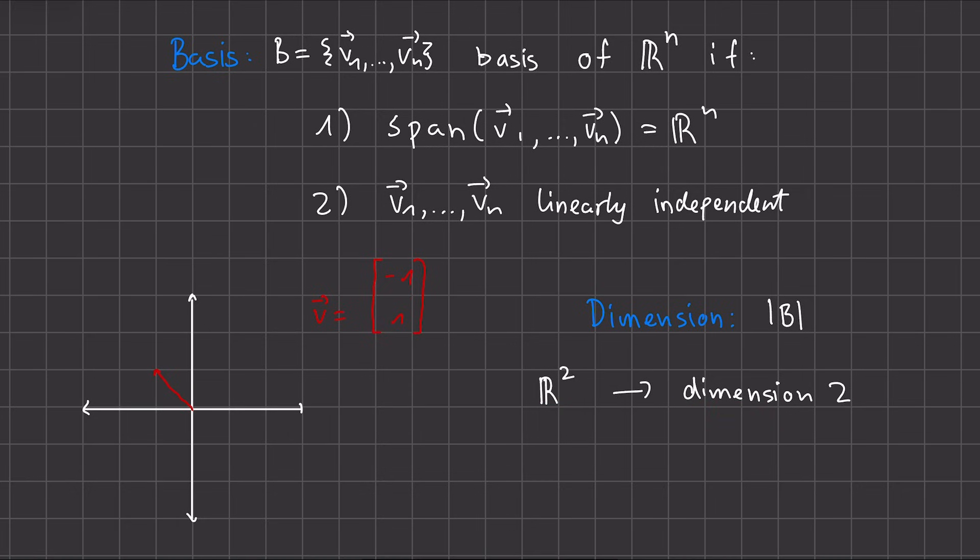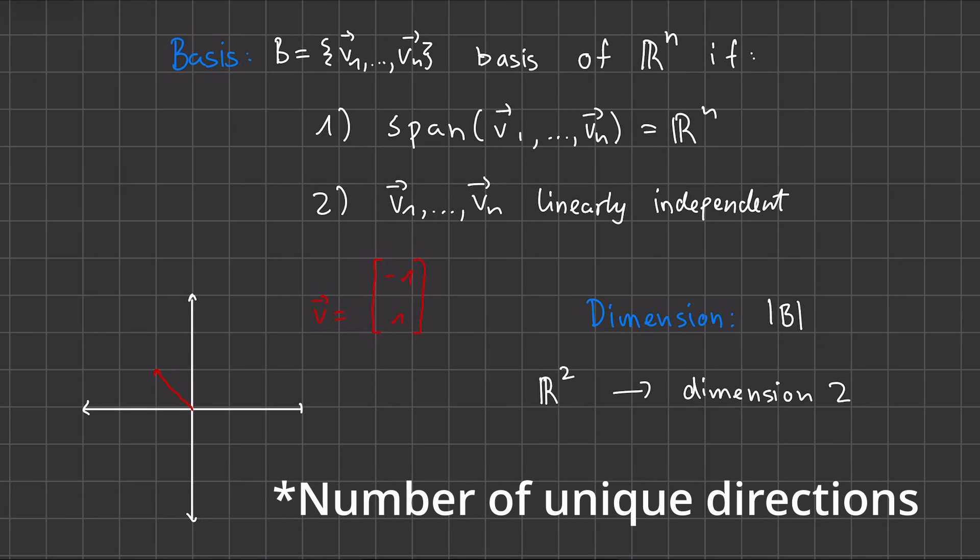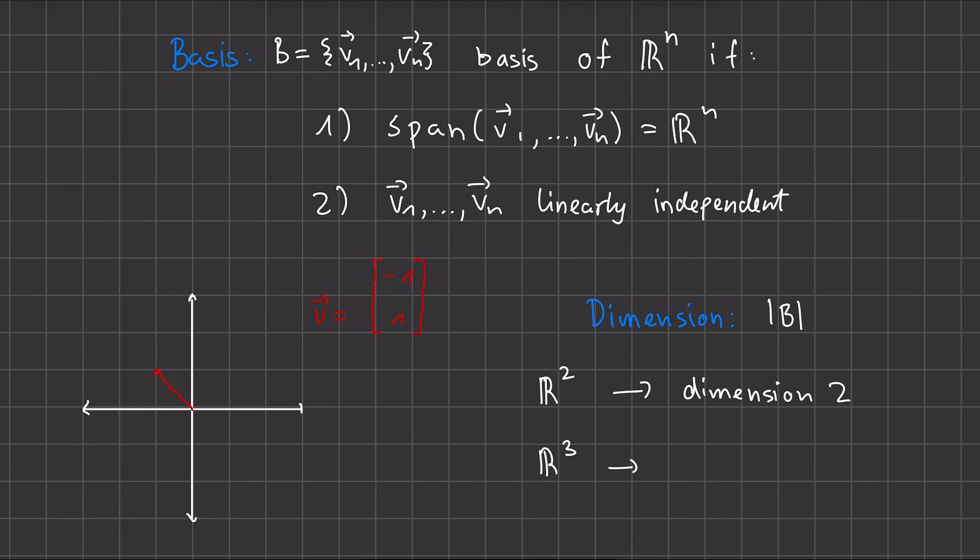You can also think of the dimension as the number of directions that our space has. So for example, for our R³, this would be 3, since we have our x, y, and z directions. And in fact, for any R^n, our dimension is just n. So R^n has n directions.